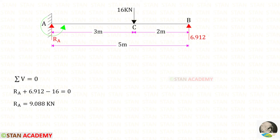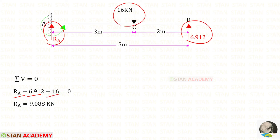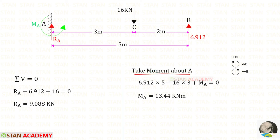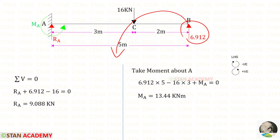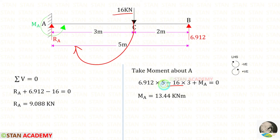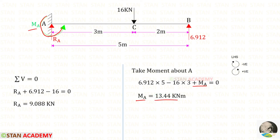Now applying sigma V = 0 to find RA: RA and RB act upwards (positive) and the 16 kN load acts downwards (negative), giving RA equal to 9.088 kilo Newton. Taking moments about A to find MA: RB acts anticlockwise (positive) at a distance of 5, and the 16 kN load acts clockwise (negative) at a distance of 3. The result for MA is a positive value, confirming our assumption — MA acts in the anticlockwise direction.